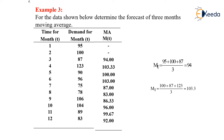Based upon these values, we have the forecast for the entire year using a 3-month moving average. This is how a problem is solved in the simple moving average method. For the first 3 months, the forecast for the upcoming 4th month is 94.